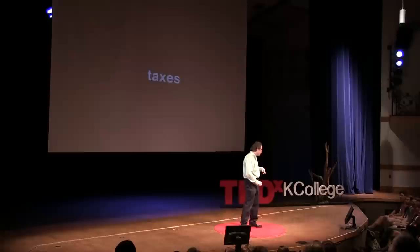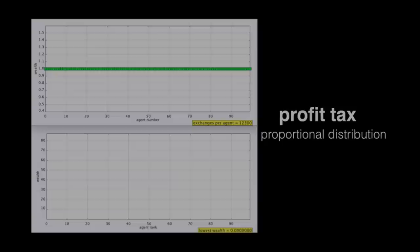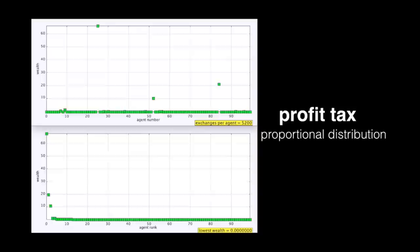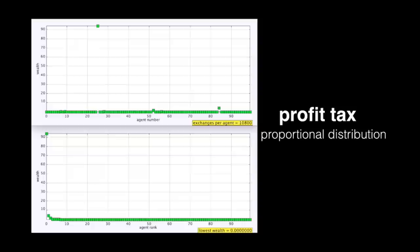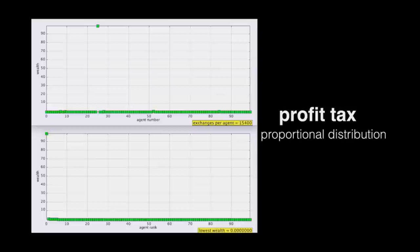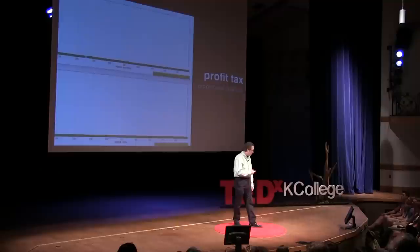So let's see what happens. We're going to look at three kinds of taxes. The first is a tax on every transaction — it's like a profit tax, a flat rate. You get a situation that's more or less the same: the bottom has nothing, one person gets everything. So just doing a flat tax on a transaction and distributing it proportionally doesn't help — in fact it might even make it worse.